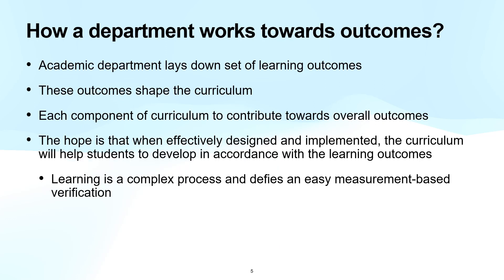Thus, an academic department should lay down a set of learning outcomes that it will strive to work towards for every undergraduate or postgraduate program it offers. By way of emphasizing, these outcomes ought to be consistent with those set out by the national accreditation bodies and thus with the broader national aims for higher education. The primary means available for the department in this endeavor is its curriculum, which ought to be shaped by the outcomes. Of course, curriculum comprises not only courses and syllabi, but the entire academic ecosystem including teaching and learning methods and student activities and assessments that contribute to the comprehensive educational experience of students.